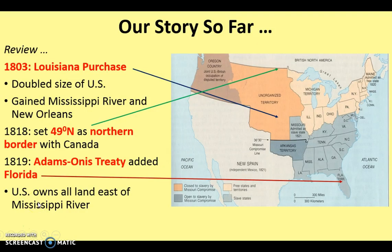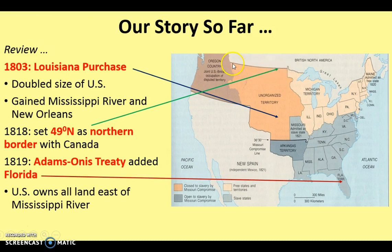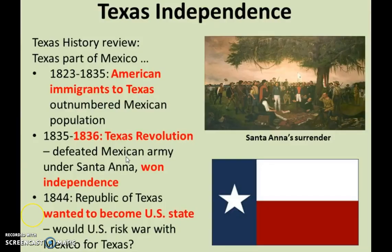Our story so far: in 1803, the U.S. acquired the Louisiana Purchase from France for $15 million, doubling the size of the U.S. and giving it control of the Mississippi River and the port of New Orleans. In 1818, a treaty with Britain set the border between the U.S. and Canada at the 49th parallel, extending as far as the disputed Oregon Territory. In 1819, the U.S. added Florida through the Adams-Onís Treaty with Spain, giving the U.S. all land east of the Mississippi plus the Louisiana Territory.